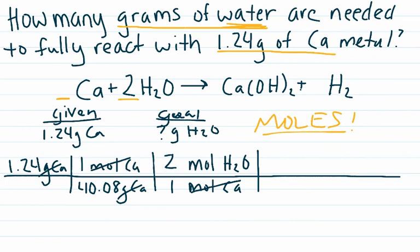We're almost there. The last step is to take the moles of whatever substance we're looking at and convert it to the unit that it's asked about. So we want to convert, in this case, from moles of water to grams of water. And we do that by using the molar mass, which you can calculate using the periodic table.